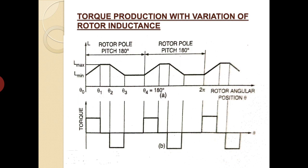What we discussed in the previous slide is shown graphically here. At θ = 0, the inductance value is minimum. As the rotor moves from 0 to θ₁, inductance increases from its minimum to maximum value. From θ₁ to θ₂, the maximum value of L is retained, and again from θ₂ to θ₃, the inductance returns to its minimum value. The nature of torque developed is also shown in this figure, and since torque is directly proportional to the change in inductance with the angular position θ of the rotor, torque is produced whenever there is a change in the inductance value.